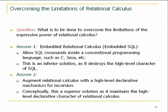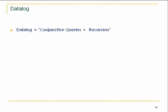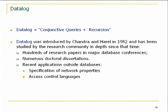The other possibility is to go back to the drawing board and augment the expressive power of calculus — of first-order logic — with some high-level declarative mechanism for recursion. This mechanism has been mentioned here under the name of fixed-point logics. Such a mechanism would be superior because it maintains the high-level character of calculus. So Datalog is conjunctive queries plus recursion. The language was introduced by Chandra and Harel in 1982, and since that time has been studied by the research community in great depth — literally hundreds of papers and scores of PhD theses.